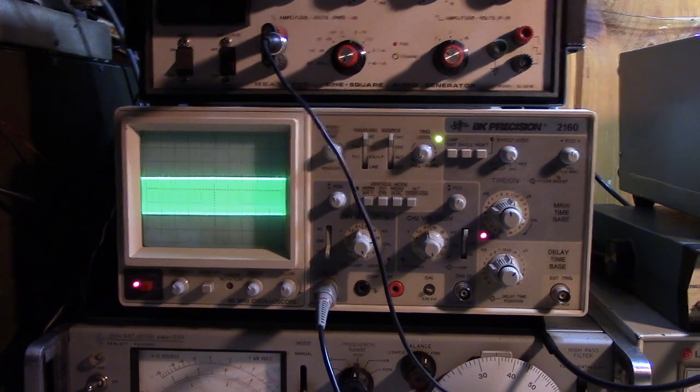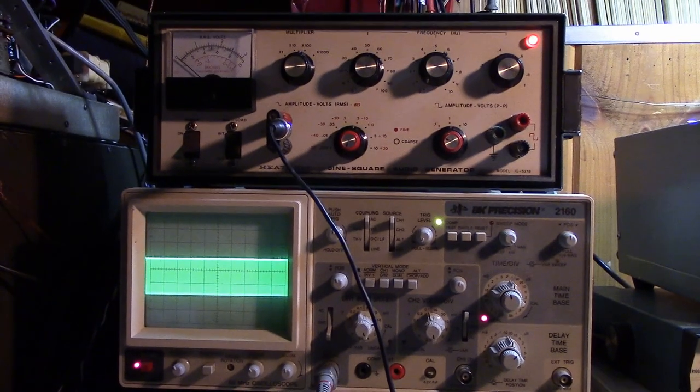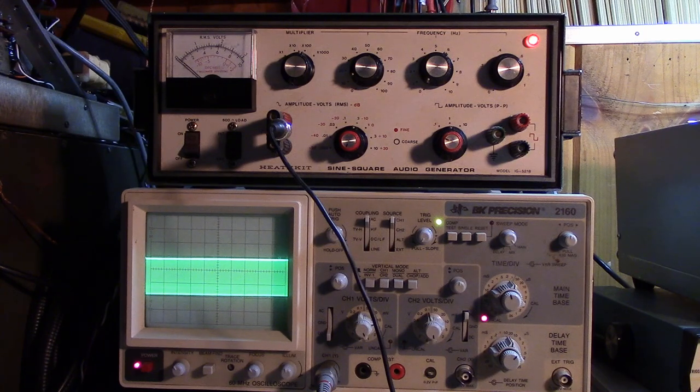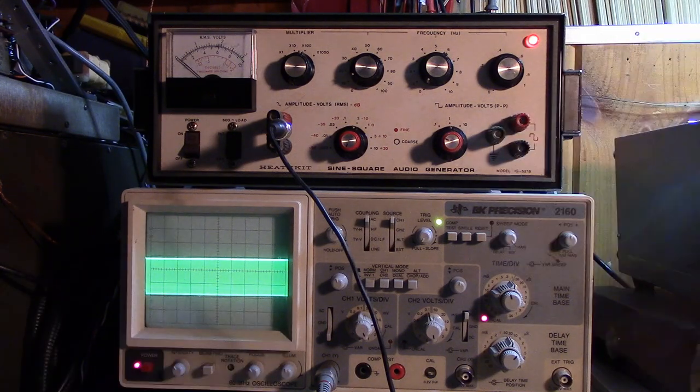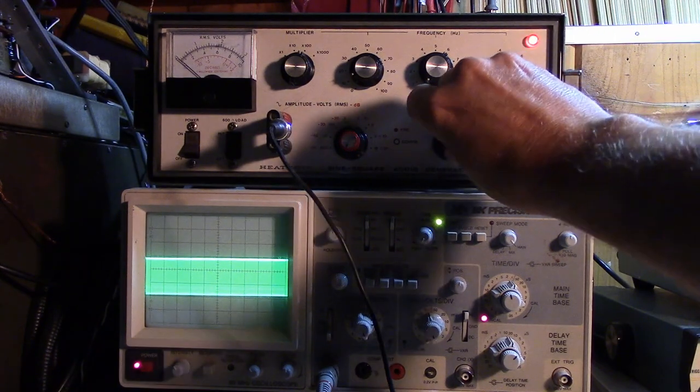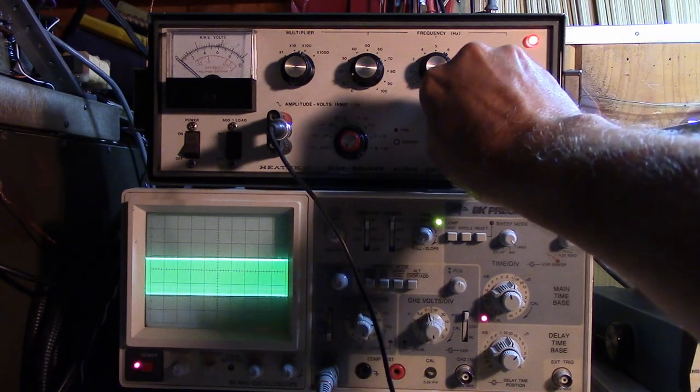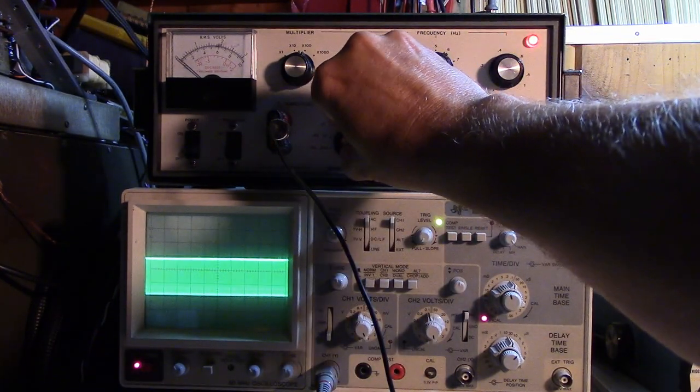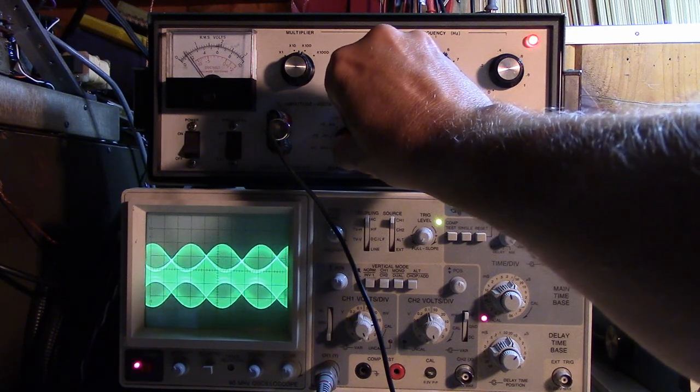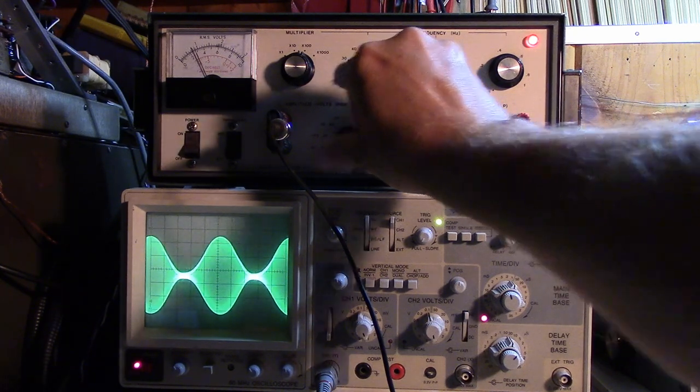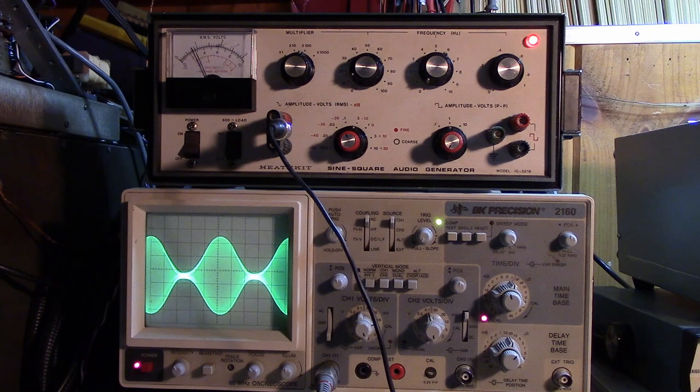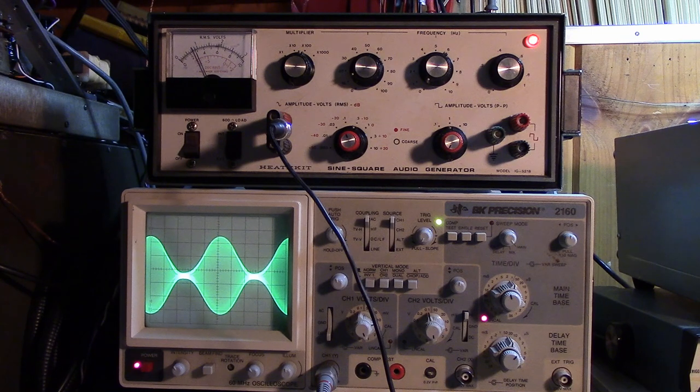Now I'm going to use my audio generator, which you can see here. The audio generator is set for 1 kHz. And I'm going to start to bring up the amplitude. Oops, that's a square wave. Start to bring up the amplitude. Here we go. Wow. A single diode AM modulator. Looks pretty good, doesn't it?